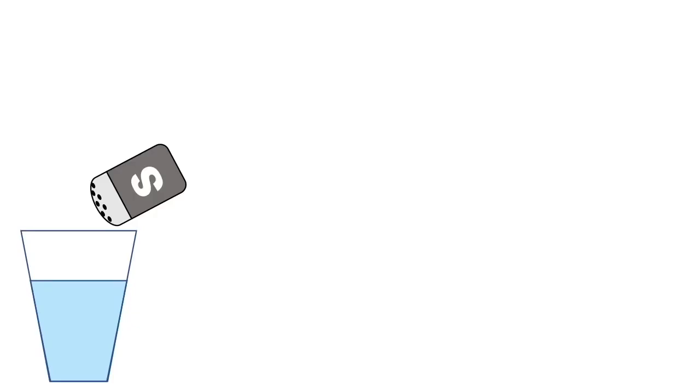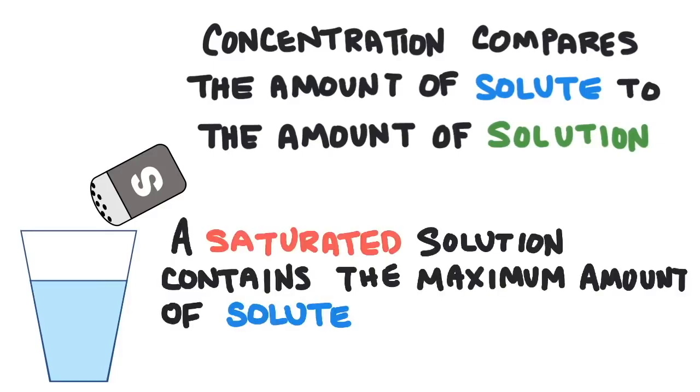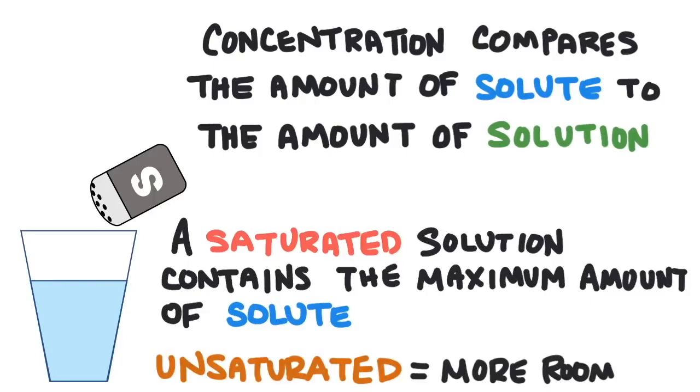A measurement that compares the amount of solute to solution is called concentration. The more concentrated a solution, the more solute particles that are dissolved. There's even a maximum amount of a given solute that can dissolve into a solution. When a solution reaches the maximum allowed dissolved solute, the solution is saturated. An unsaturated solution means there's still room for more solute.